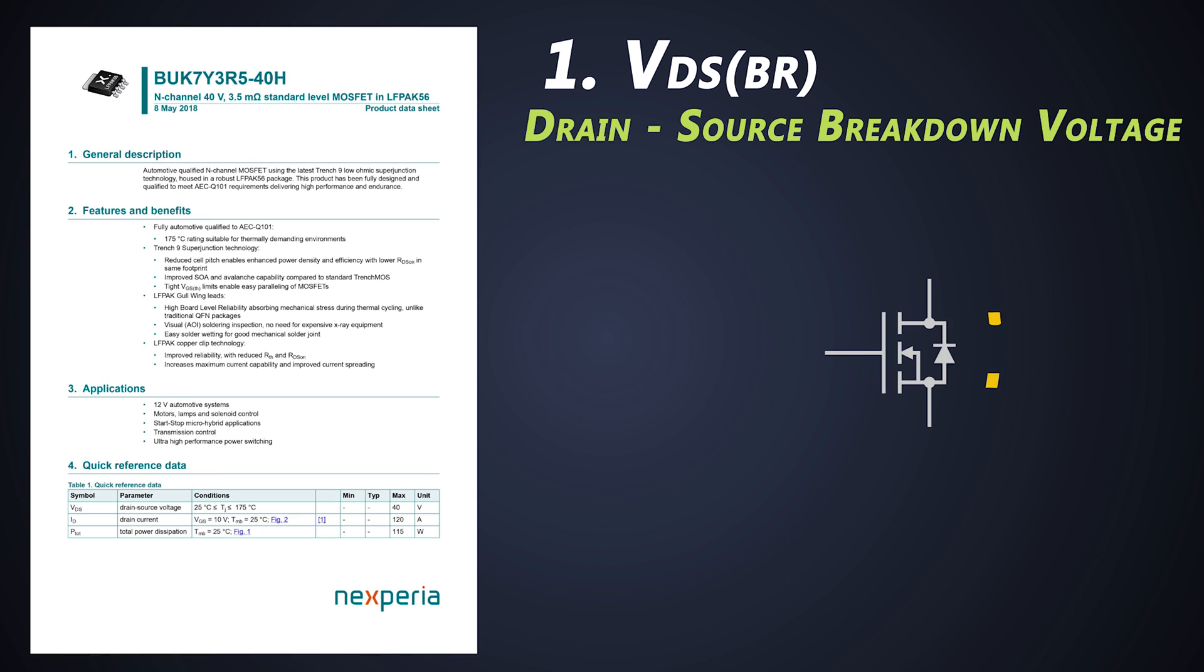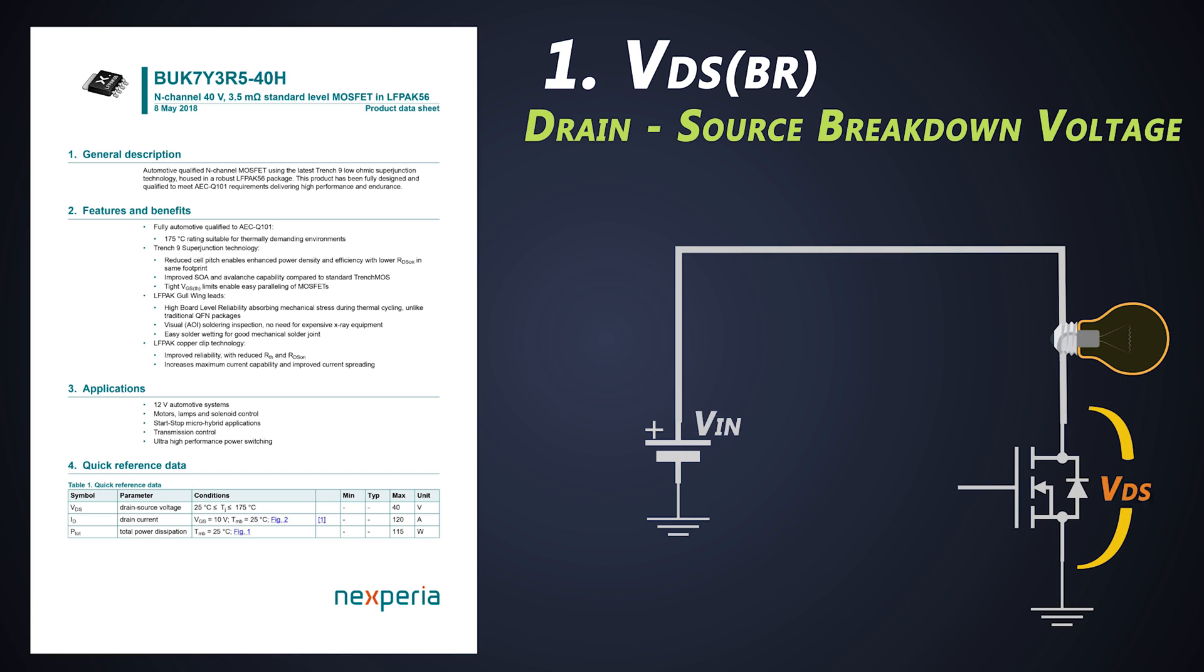First we need to start with drain to source breakdown voltage. This rating is important in selecting MOSFETs. If the application voltage exceeds this voltage value, then it might result in the destruction of a MOSFET. We should choose MOSFETs with a VDS sufficiently higher than the voltage at which we will be using it. This rating denotes that it can block this voltage without damaging itself when it is in off state.